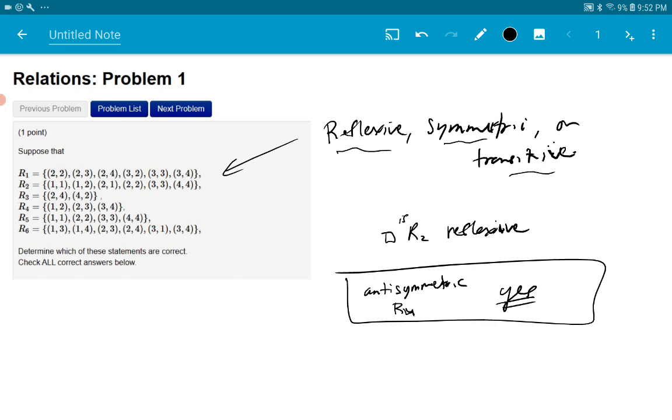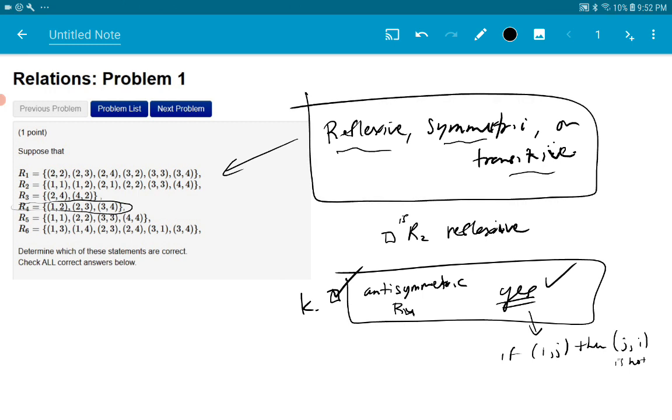If you want to know why, it's because anti-symmetric doesn't mean it's not symmetric. It just means that if, basically it means if IJ is there, then JI is not there. And that R4 does satisfy that property. So just click that box for that one. I think that's K for you. So that one should be checked. But for all the rest, you should be able to decide, because we did cover all the other concepts, reflexive, symmetric, and transitive.